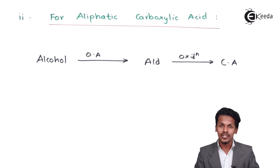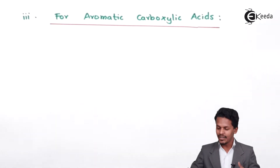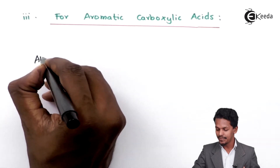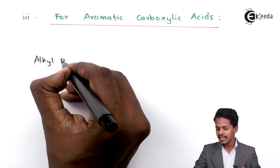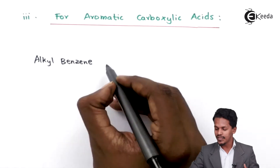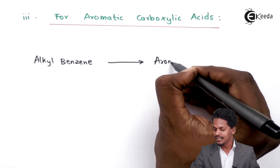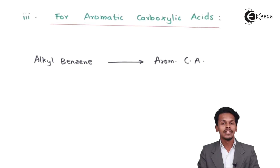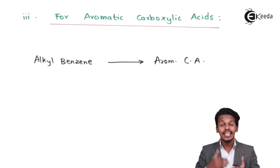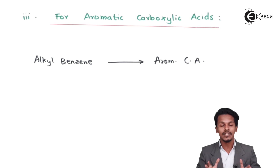To prepare aromatic carboxylic acid, we take alkyl benzene. When alkyl benzene undergoes a process in the presence of an oxidizing agent, we can obtain the aromatic carboxylic acid. This was just the synopsis — each reaction will be explained in detail in the next lecture. I hope you have understood this topic and I will see you next time.